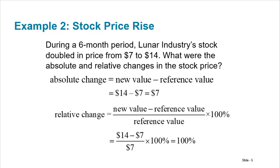During a six-month period, Lunar Industry stock doubled in price from $7 to $14. What were the absolute and relative changes in the stock price? The absolute change is just the difference: 14 minus 7, it went up by $7. The relative change takes that difference and divides by the starting point — 7 over 7 is 1, times 100% means it went up by 100%. That makes sense: if it doubles, it goes up by 100%.